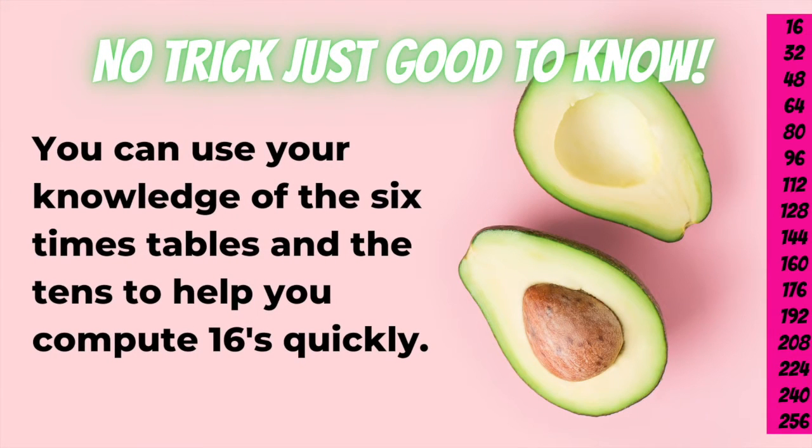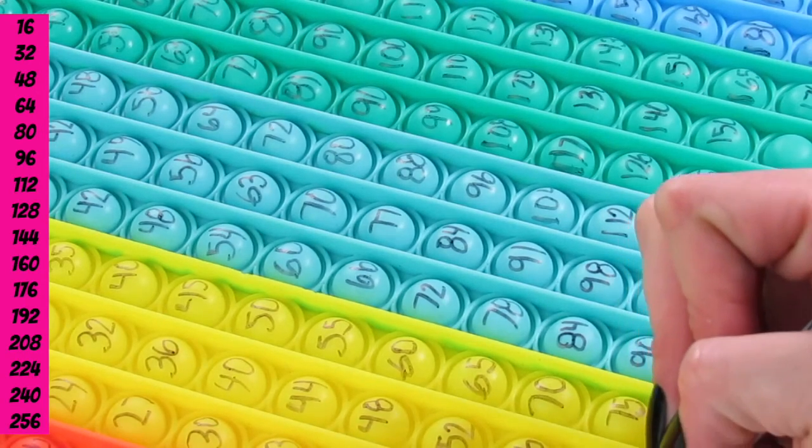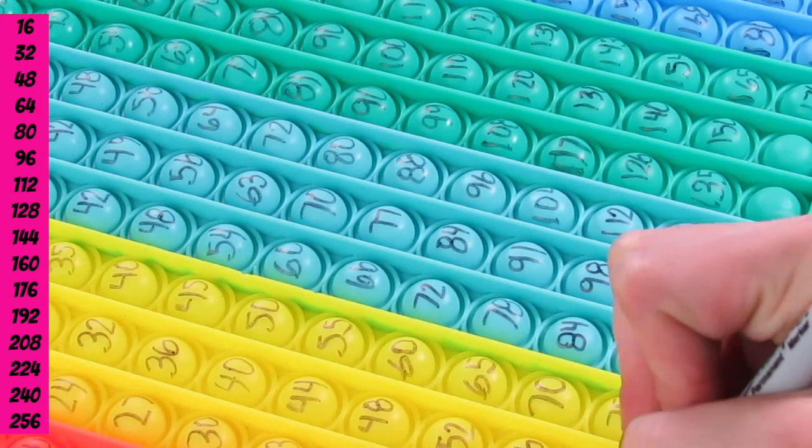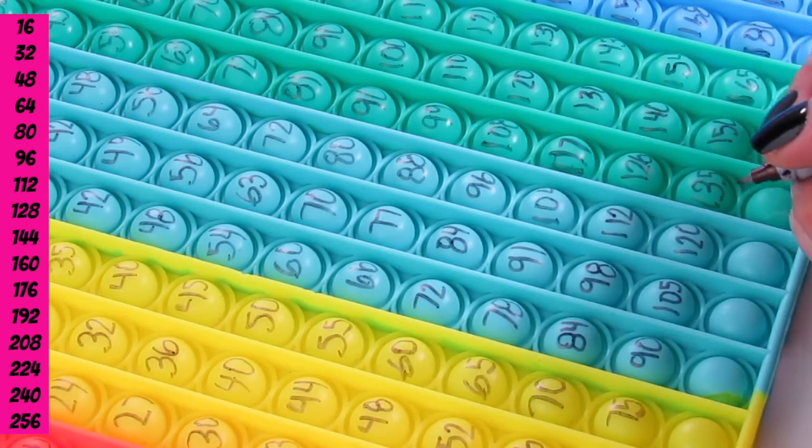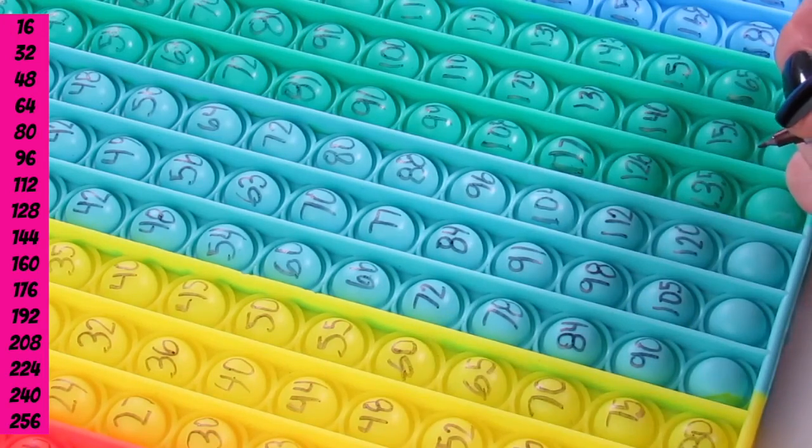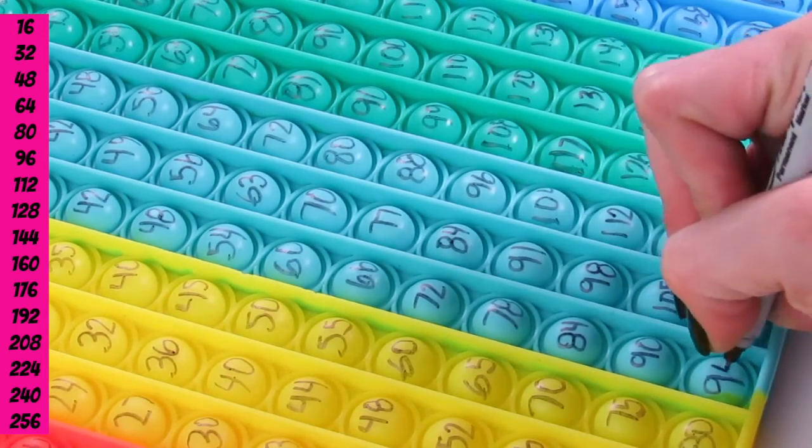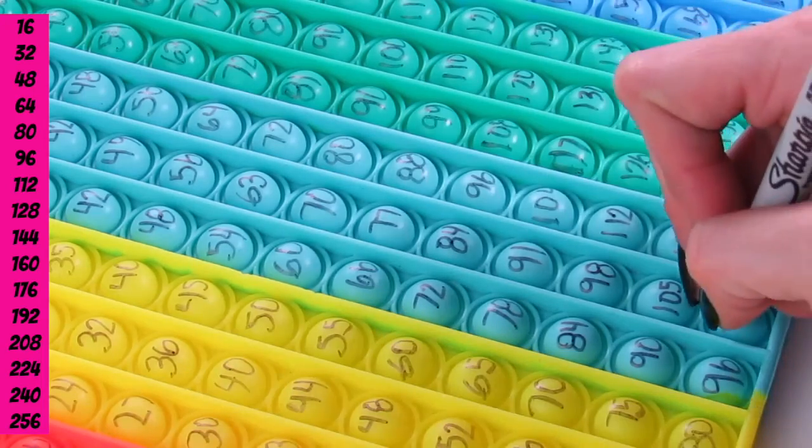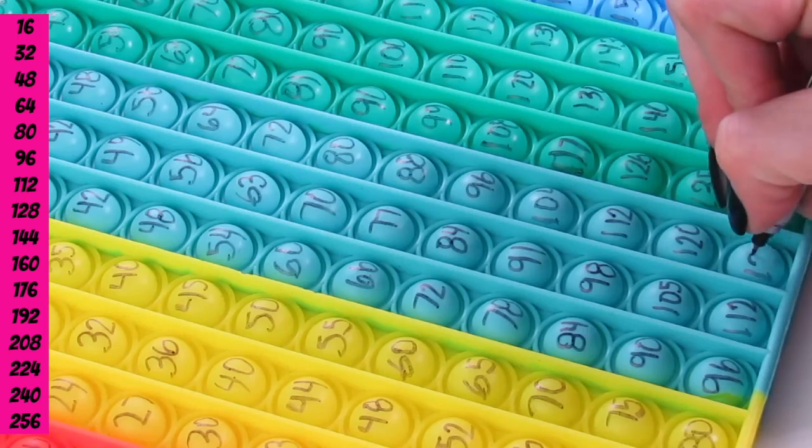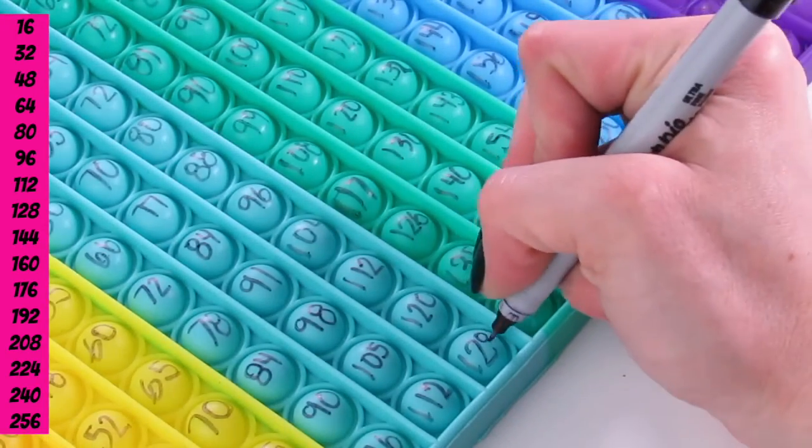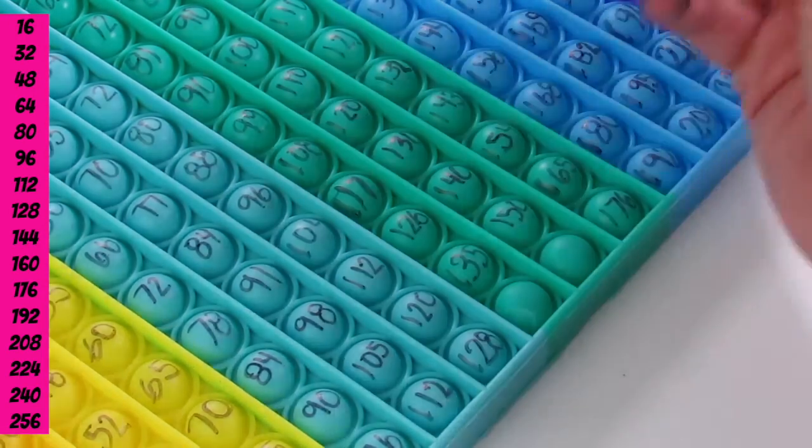But, you can use your knowledge of the 10s table and 6s to help you compute quicker. But, oh yeah, the 8s too. But, you can see the multiples of 16 there. 16, 32, 48, 64, 80, 96, 112. And, when you get to 16 times 16, that is 256.